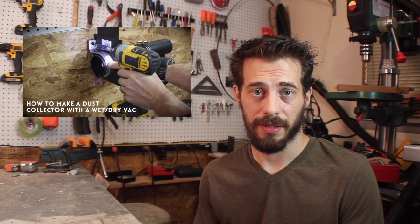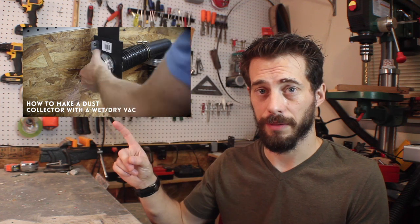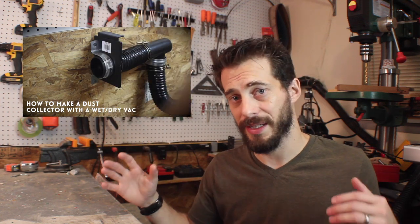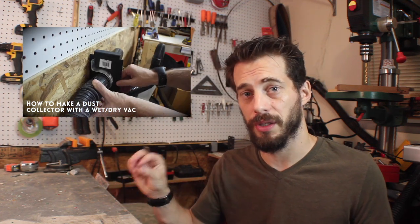So a while back, I made my own dust collection system, and you can check that out right here. In that system, every tool has a blast gate in front of it so that I can turn the suction on and off individually for each tool. Now, the problem is that means they're spread out all over the shop, and if you want to use one, you have to make sure that all the other ones are closed. So in this project, I'm going to use an Arduino and some servos to manage all of them at the same time from one place.